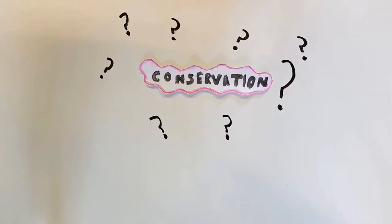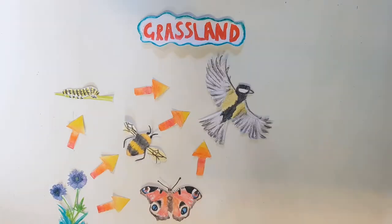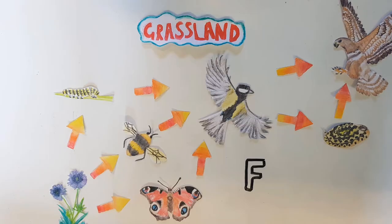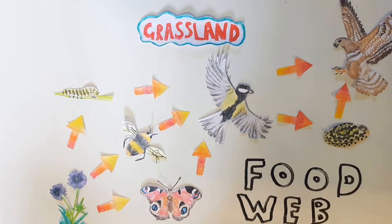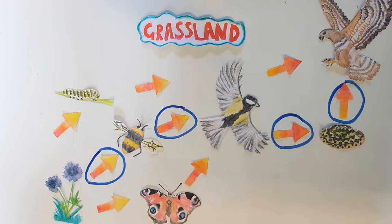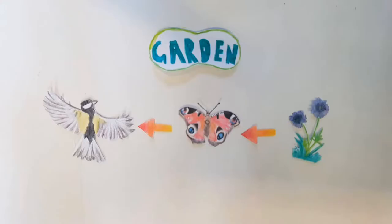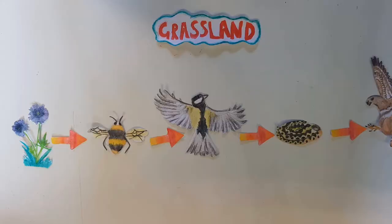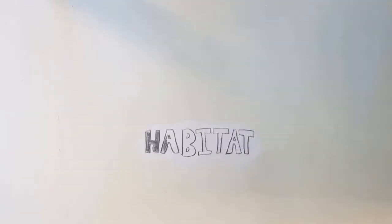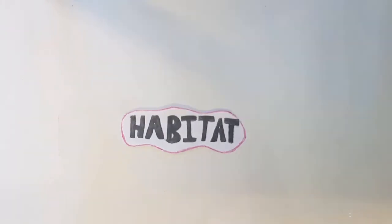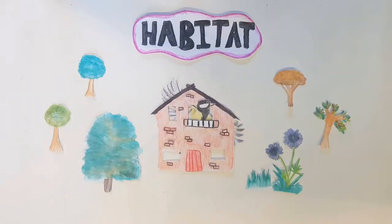What is conservation? In the last video we learned about food webs and how they're made up of lots of food chains, and how many animals and plants are connected through these webs. Did you notice that the food chains were all in different places? These are all called habitats. A habitat is a place where an animal or plant lives, like its home, but it also includes the natural environment around where it lives.